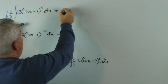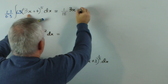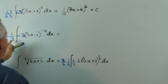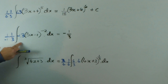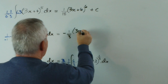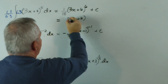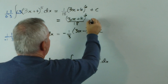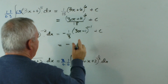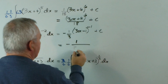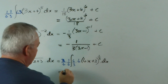So this one would be 1 over 18 times — and this is a pure integral now — and it's going to be 3x plus 4 to the power of 6. This one is going to be negative one-third, and this now is a complete form, so it's going to be 3x minus 1 to the minus 1. If we tidied the first one up, it would be 3x plus 4 to the sixth power over 18.